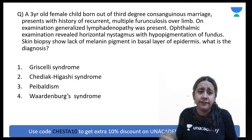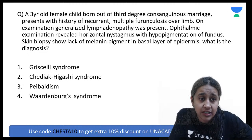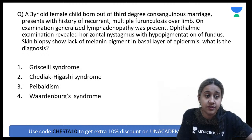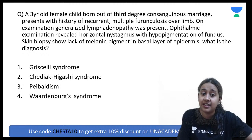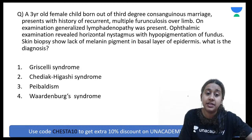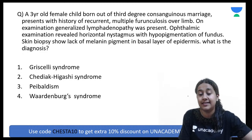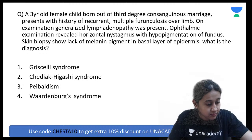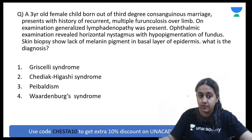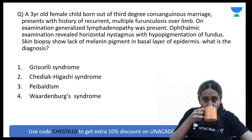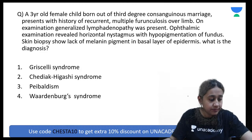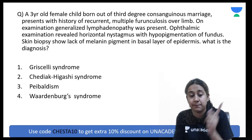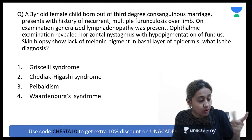Next question: A 3-year-old female born of a third-degree consanguineous marriage presents with a history of recurrent multiple furunculosis. On examination, generalized lymphadenopathy is present. Ophthalmic examination reveals horizontal nystagmus with hypopigmented fundus.